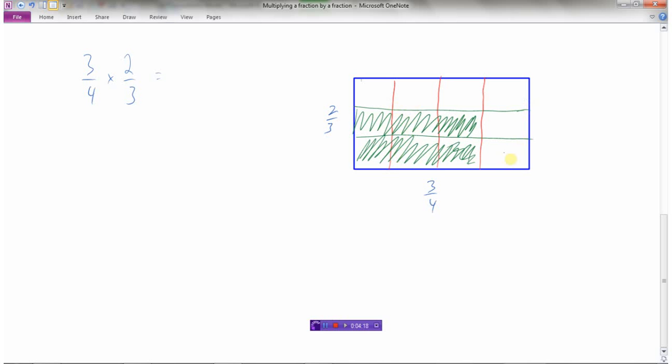Now let's see how many squares I've got. One, two, three, four, five, six, seven, eight, nine, ten, eleven, twelve. There are twelve squares in total here.